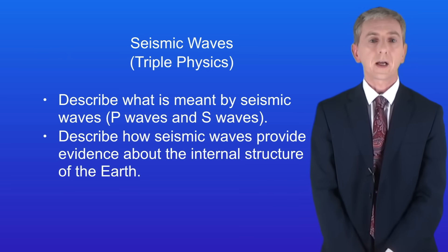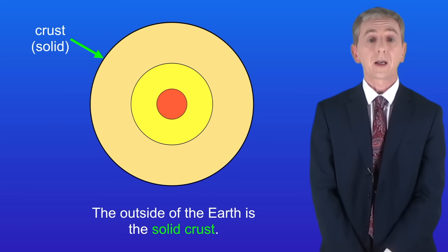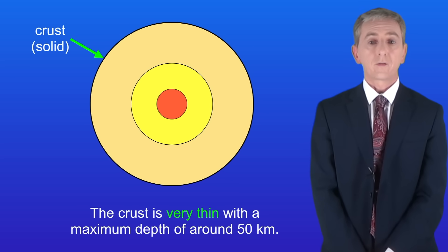Okay, so in this video we're looking at how scientists have worked out the internal structure of the earth. We're going to start by looking at the internal structure which I'm showing you here. The outside of the earth is the solid crust. The crust is very thin with a maximum depth of around 50 kilometers.